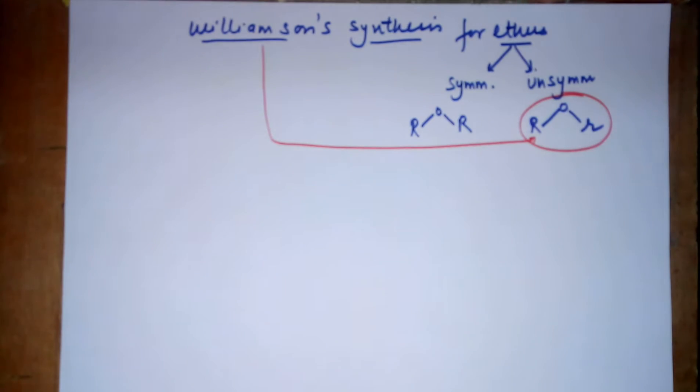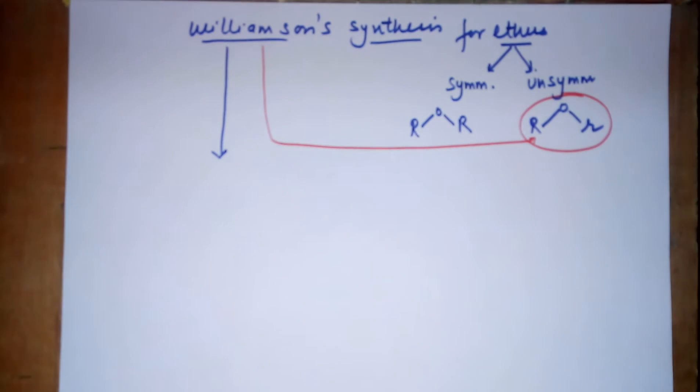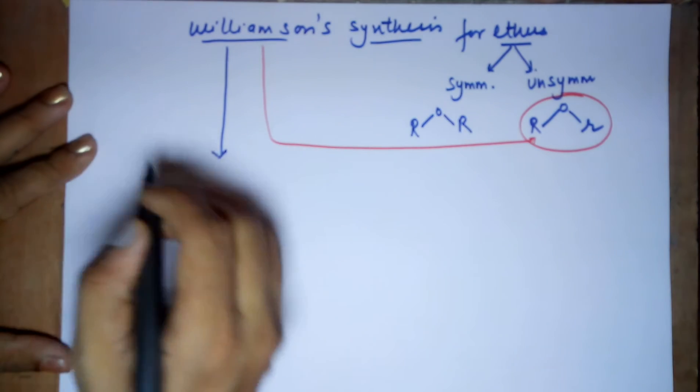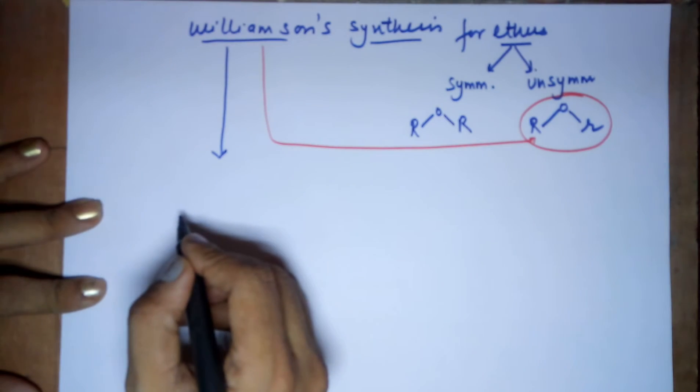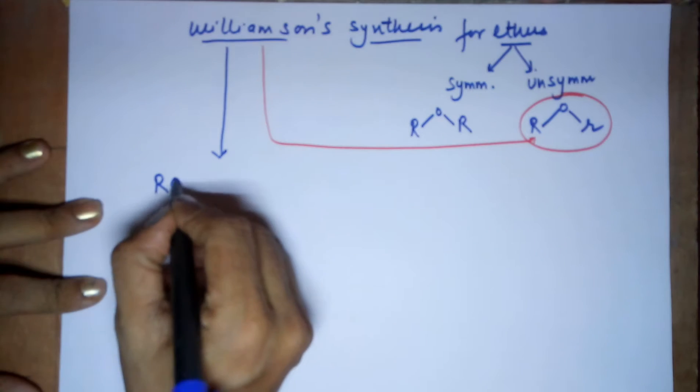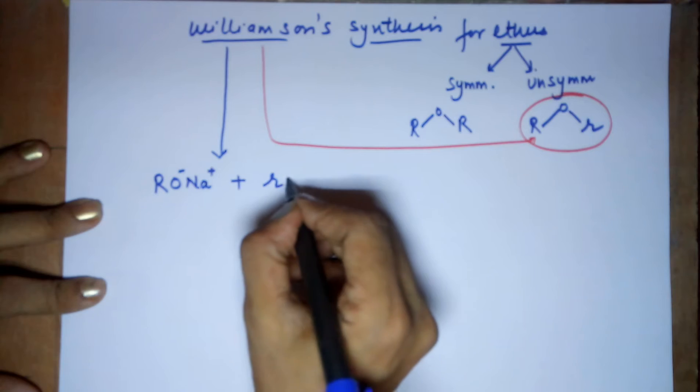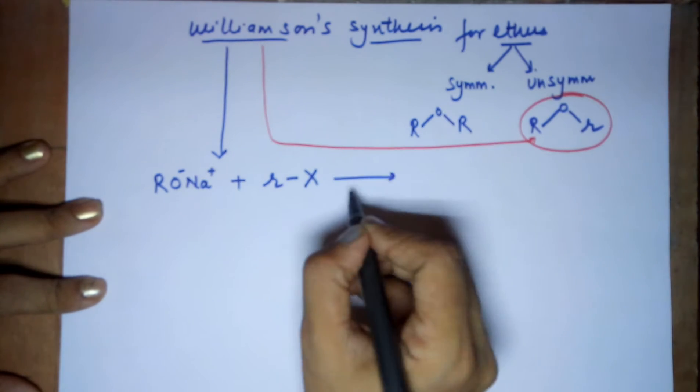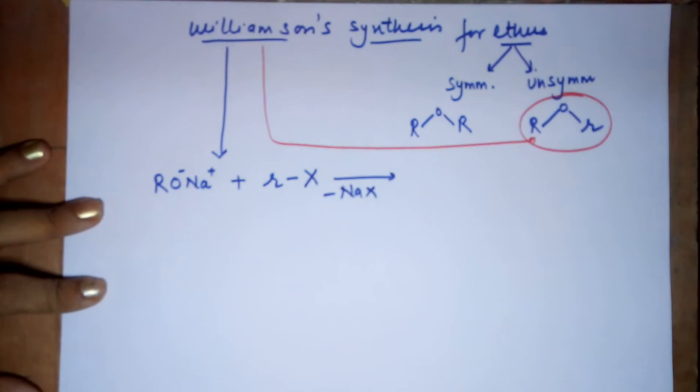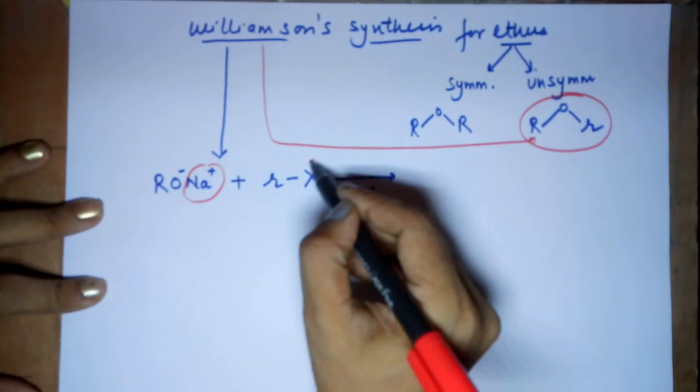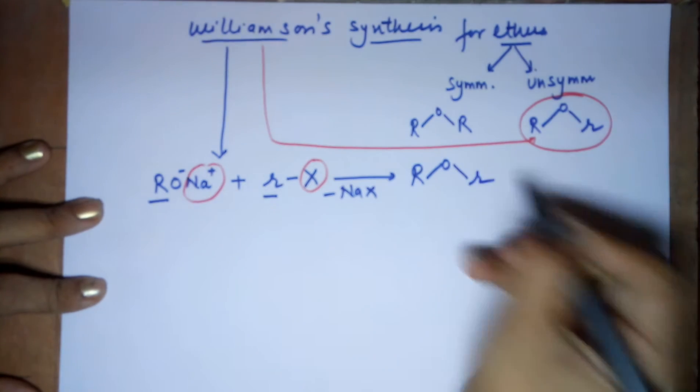Now moving ahead, to prepare an unsymmetrical ether via using the Williamson's Synthesis, you will be requiring an alkyl halide and a sodium salt of alkoxide. Which means if I have to prepare an ether, one is to be a sodium salt of alkoxide and the second is to be a halide. Now this reaction happens on its own. NaX nikal jayega. You remove the NaX. So your Na and X are removed. What do you end up with? You are left with R-O and R. So that's your unsymmetrical ether.